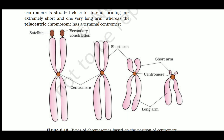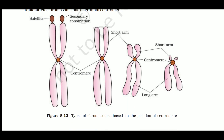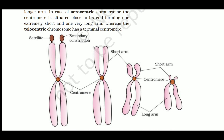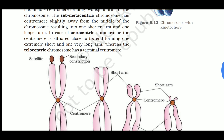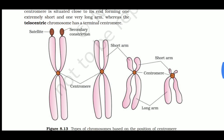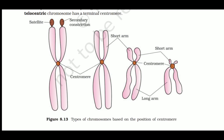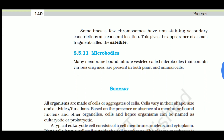Telocentric chromosome has a terminal centromere, with a very short arm and one very long arm. So the four types are: metacentric, submetacentric, acrocentric, and telocentric. Some chromosomes also have non-staining secondary constrictions at a constant location, giving the appearance of a fragment called a satellite.